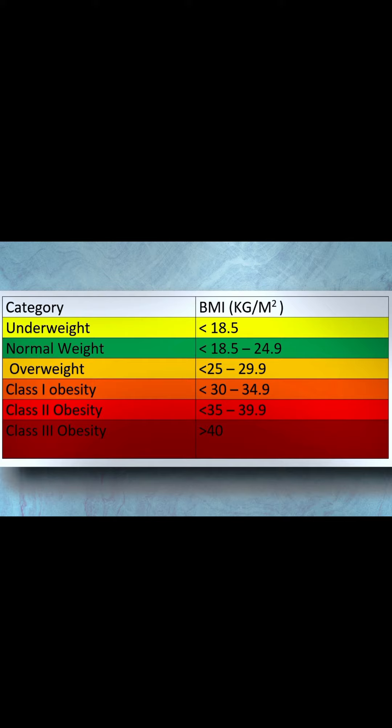The fifth category is between 35 and 39.9 — they are class 2 obesity. And the last category, people with a BMI of 40 and above, are class 3 obesity.